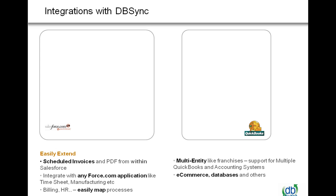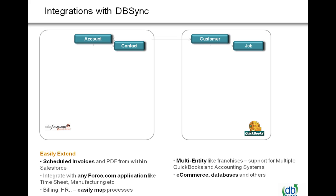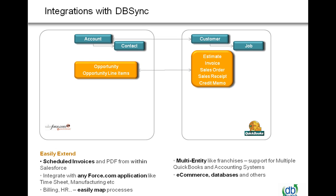Now I'm going to provide you a background about the integrations you can do with dbSync and how the integration works between Salesforce and QuickBooks. By default, an account and contact get pushed across to QuickBooks as a customer and as a job. The account and contact object get integrated with QuickBooks as a customer and as a job. The opportunity name is used to create a job, but the contact name can also be used to create a job. For dbSync, it's completely customizable.